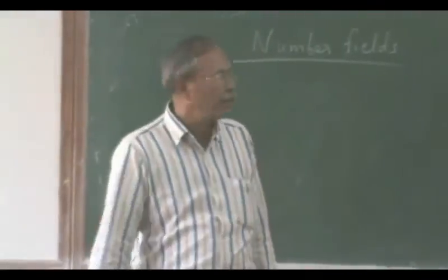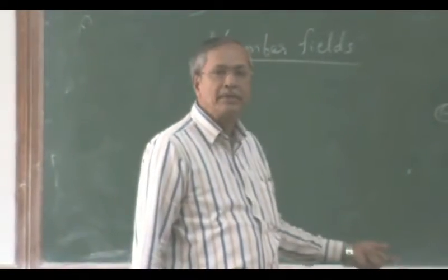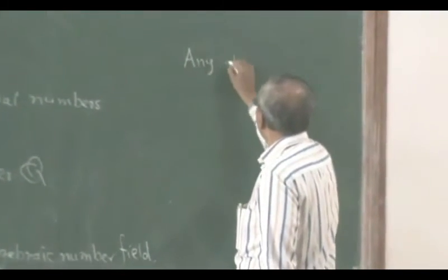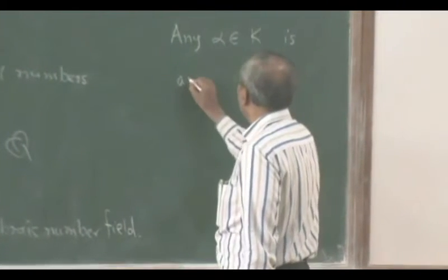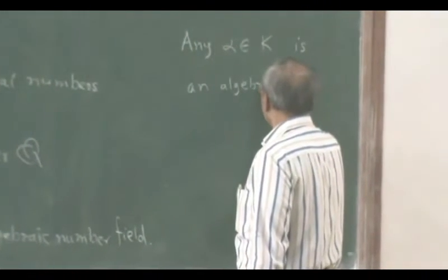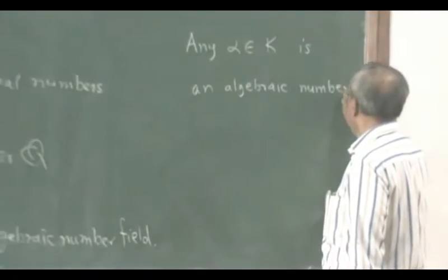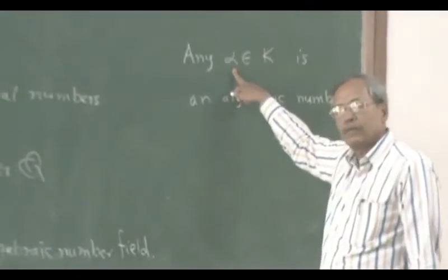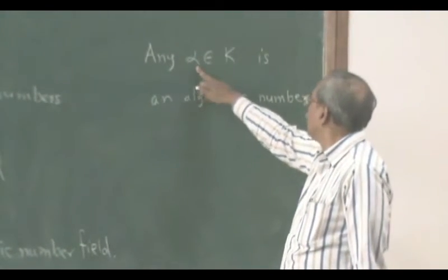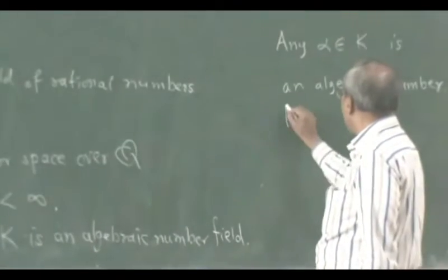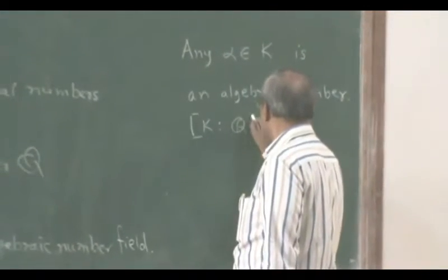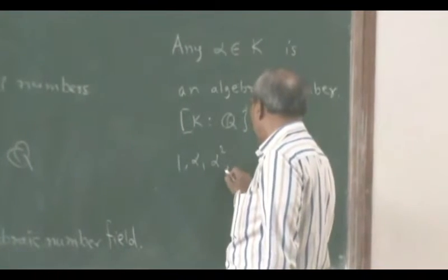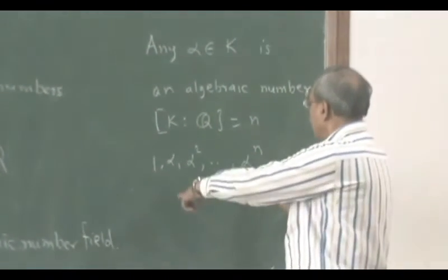The reason this is called an algebraic number field is that its elements are algebraic numbers. So, any alpha in K is an algebraic number, and by that we mean that this alpha satisfies a polynomial equation over Q. If we consider this dimension to be n, then for alpha in K, the numbers 1, alpha, alpha squared,